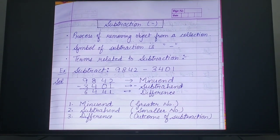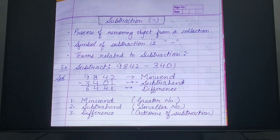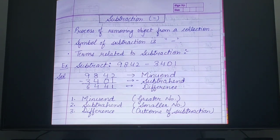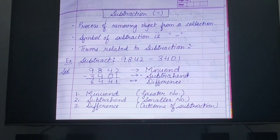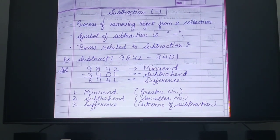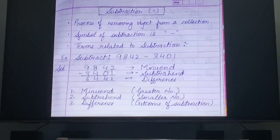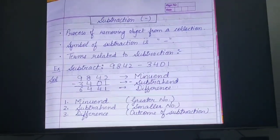As we have studied in addition, there were 2 terms: addends and sum. Addends are the numbers that will be added, and the sum is the outcome of the addition.